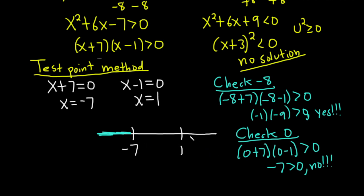And now let's pick another number. How about 2? Because 2 is a number bigger than 1. So let's check. Check 2. So we get 2 plus 7, and then 2 minus 1. And we want to see if that's greater than 0. So 2 plus 7 is 9. 2 minus 1 is 1. Is that greater than 0? Yes. Yes, it is. It is greater than 0. So we shade here.